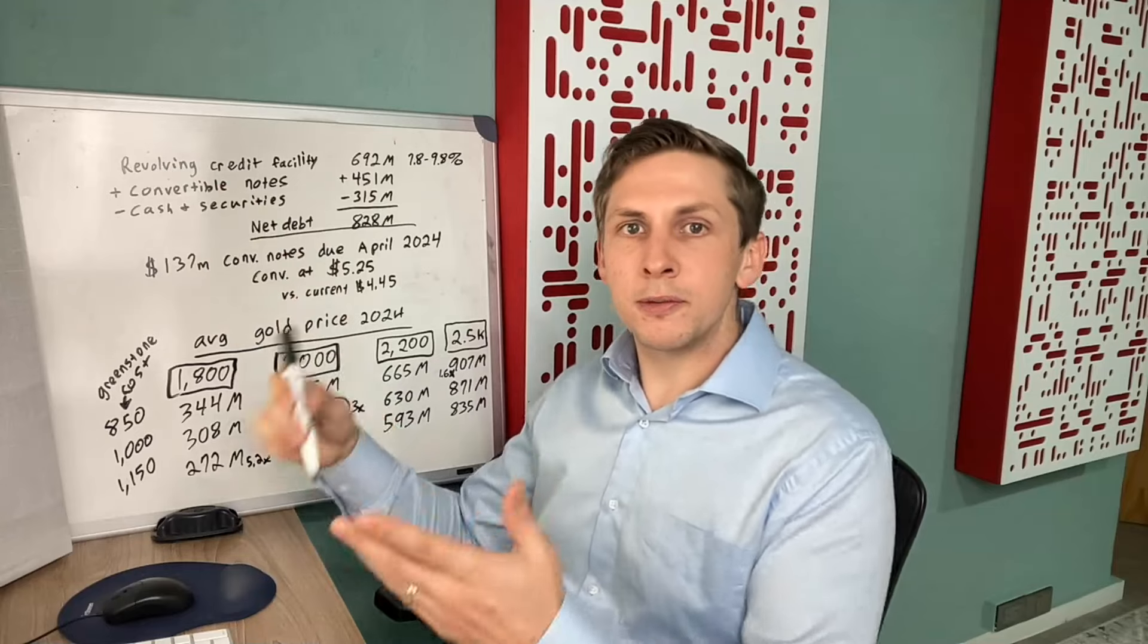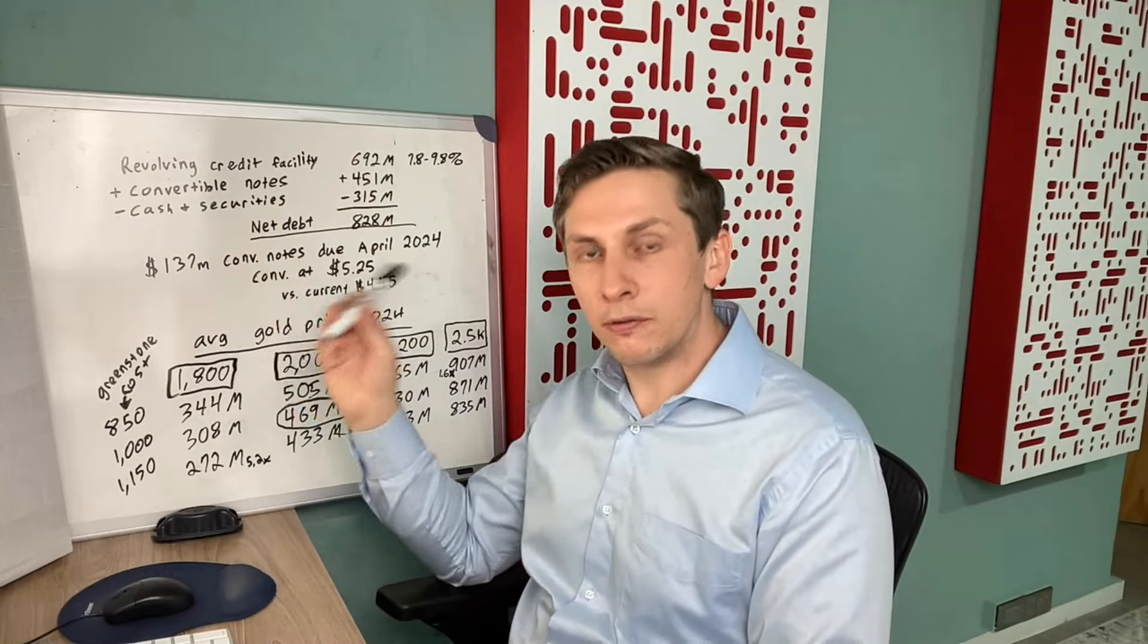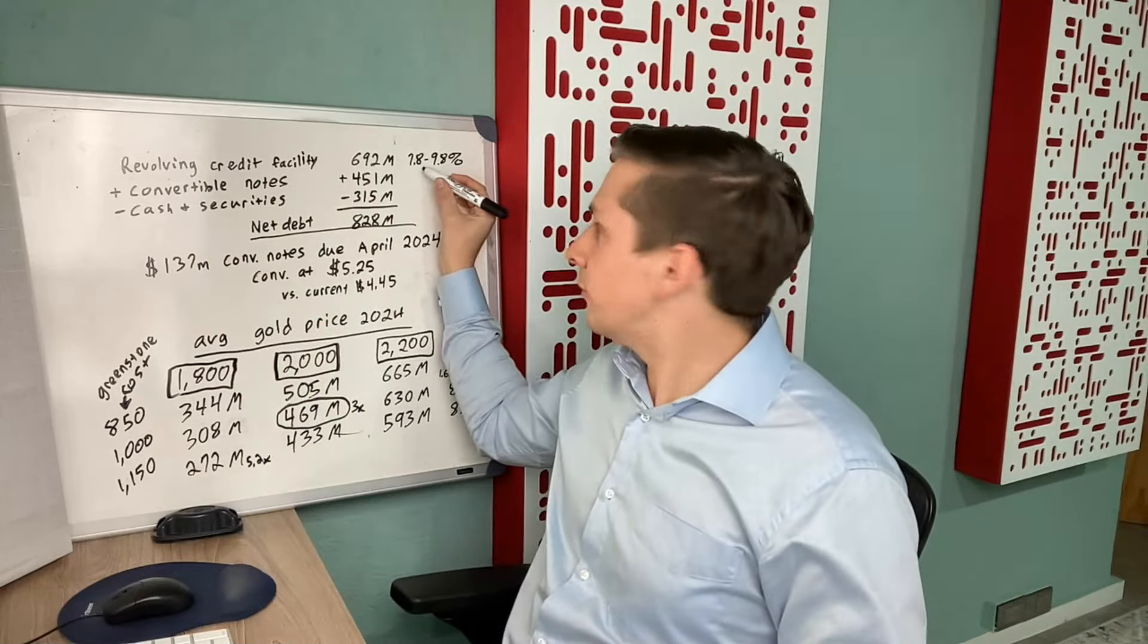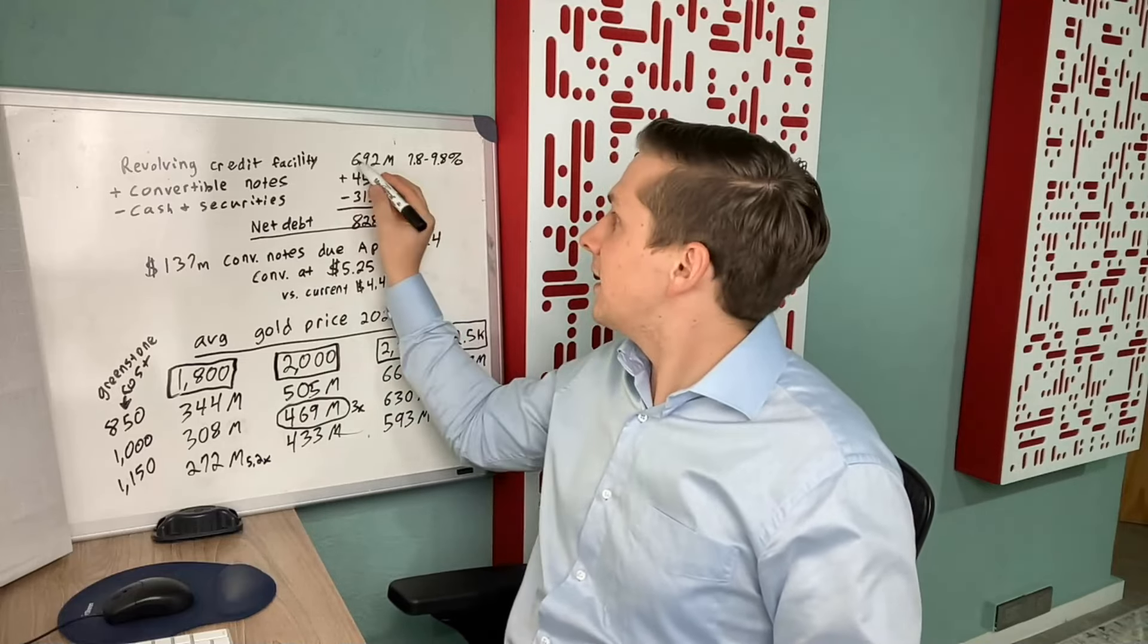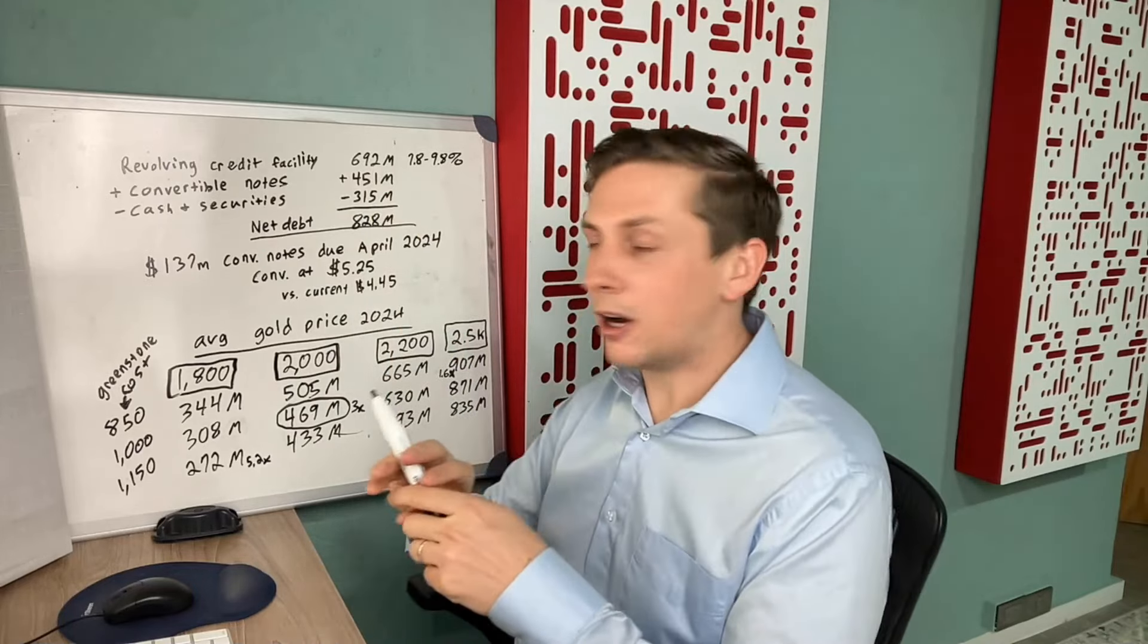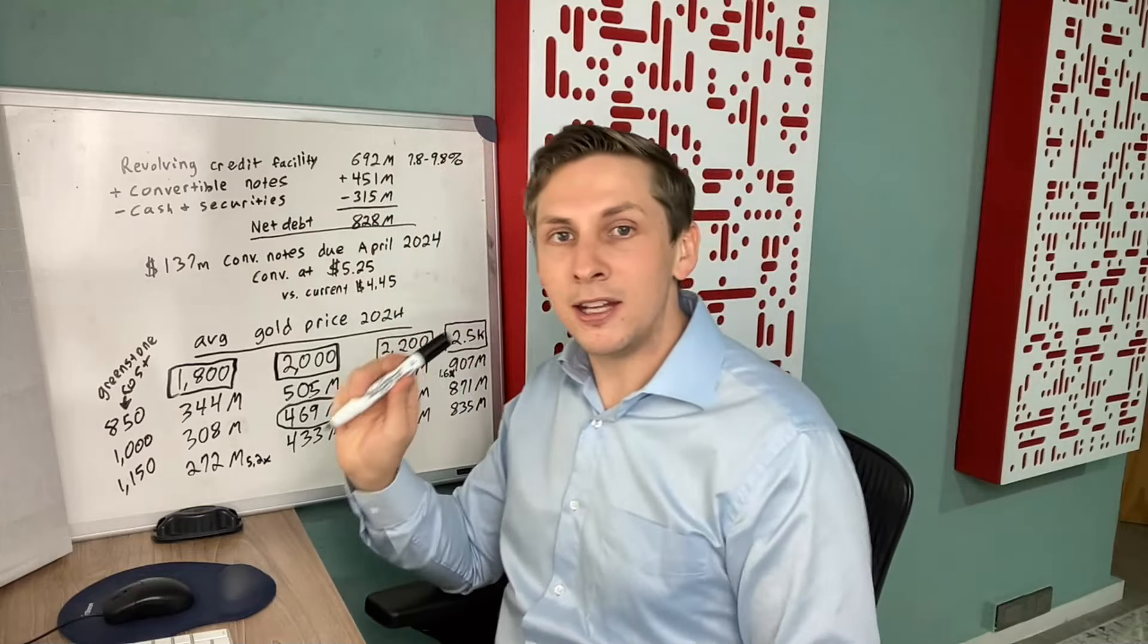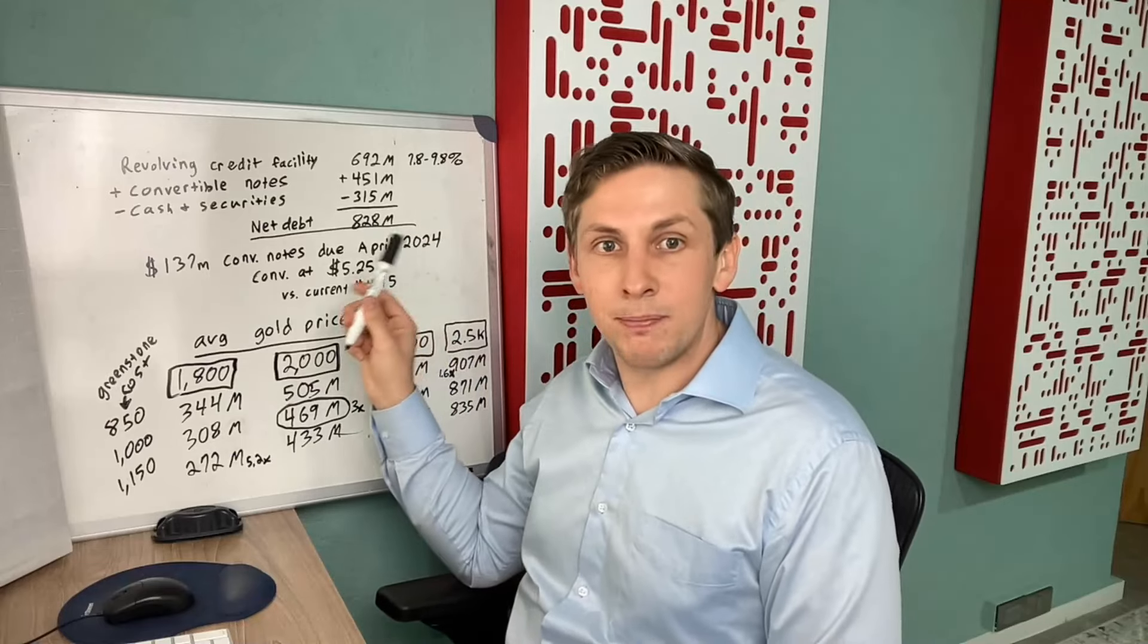This is pretty rare to see. They have a revolving credit facility that funds most of their long-term debt and that has an interest rate anywhere from 7.8% to 9.8%, and that's $692 million. So they're paying a significant chunk in interest every single year that that isn't paid down, so they need to pay that down fast.